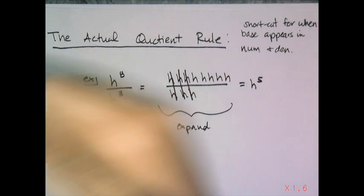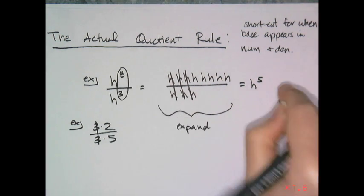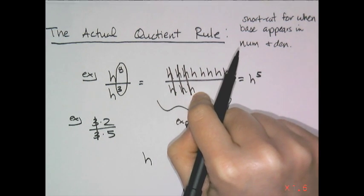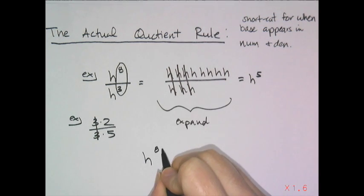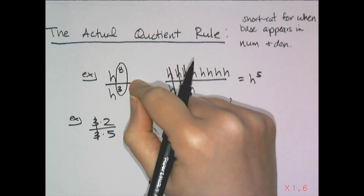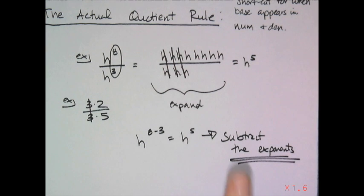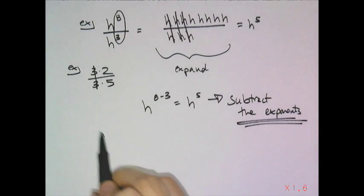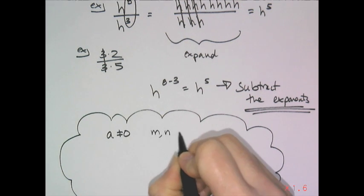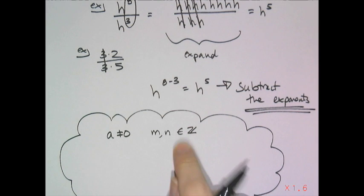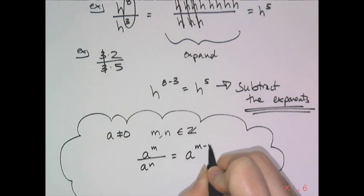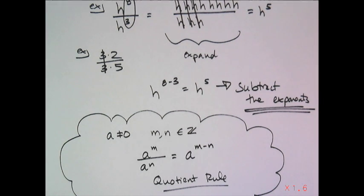The quotient rule states: for any non-zero base a, and integer exponents m and n, a to the m divided by a to the n equals a to the m minus n. This works with positive or negative exponents — just be careful with signs when something is negative.